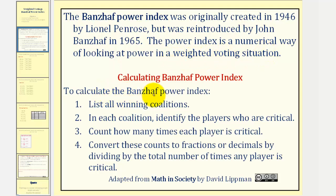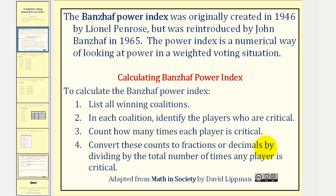To calculate the Banzhaf Power Index: number one, we want to find or list the winning coalitions. Two, in each winning coalition, we want to identify the players who are critical. Three, we want to count how many times each player is critical. And then finally, number four, we want to convert these counts to fractions, decimals, or percentages by dividing by the total number of times any player is critical.